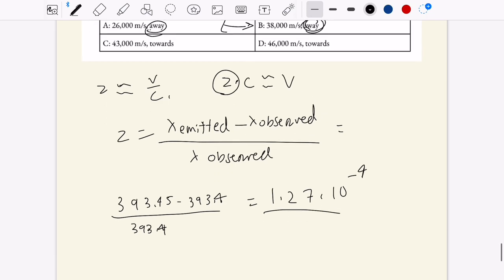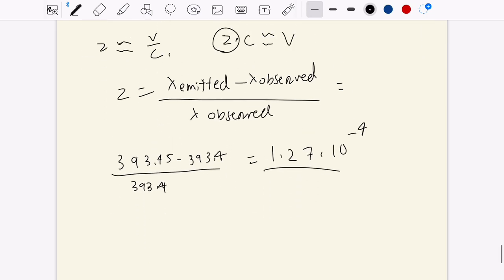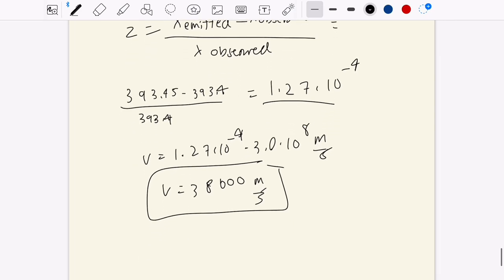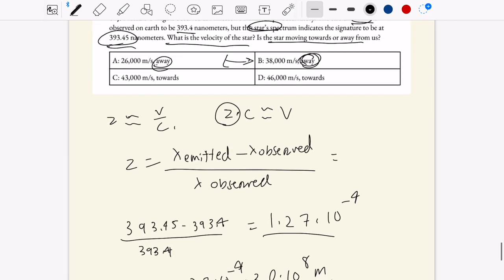And now, to get v, we just multiply by c. So then v is equal to 1.27 times 10 to the negative 4, times 3.08 times 10 to the 8th meters a second, times 3 times 10 to the 8th. And when you do all that, you get that v is about 38,000 meters a second. So that's your final answer. The quick thing to note is that since this result is positive, that tells us that the star is moving away from us. If we got a negative result, that means it's moving towards us.